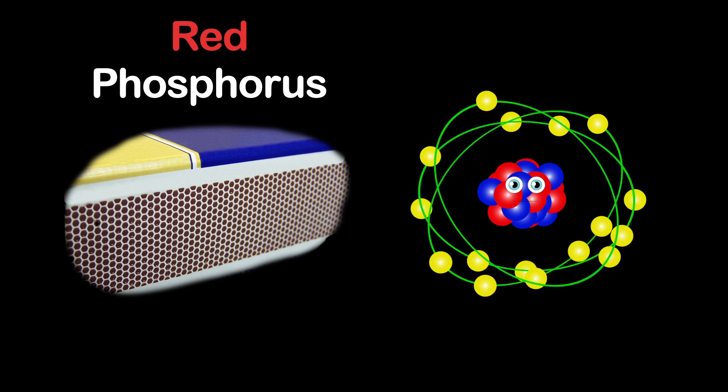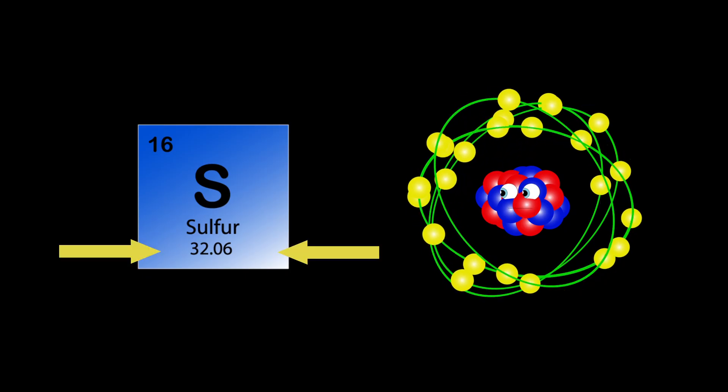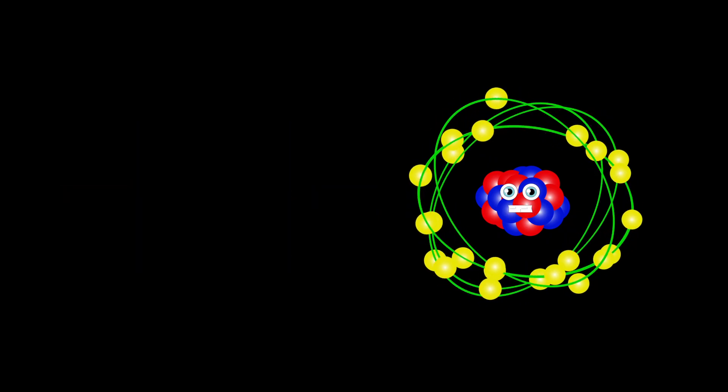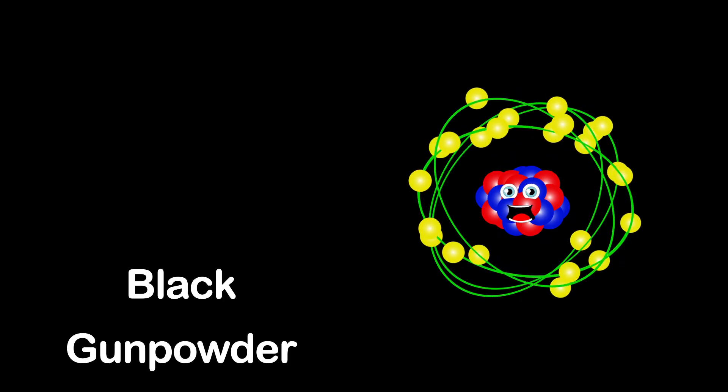My name is sulfur. My atomic number is 16. My atomic mass is 32.06. My symbol's S. This is where it's seen. Sulfur is used in the vulcanization of black rubber and as a fungicide and in black gunpowder.